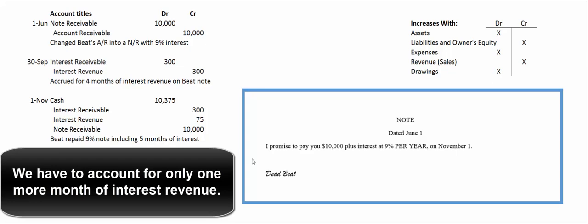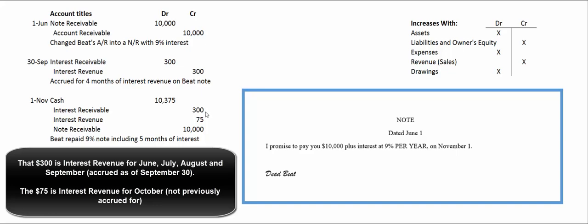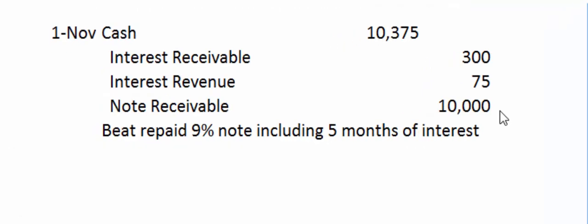The last journal entry: he writes us a check for $10,375. Cash is an asset, so assets increase with debits. We take the interest receivable off our books — we already booked that interest revenue for June, July, August, and September, which is four months. Another month has gone by, so we book $75 worth of interest revenue for October. We take the note receivable off our books with a credit. A memo notes that deadbeat repaid his 9% note including five months worth of interest.